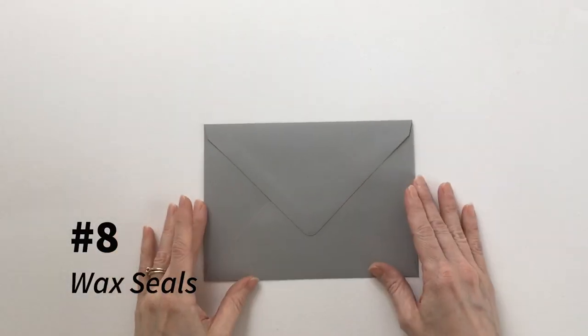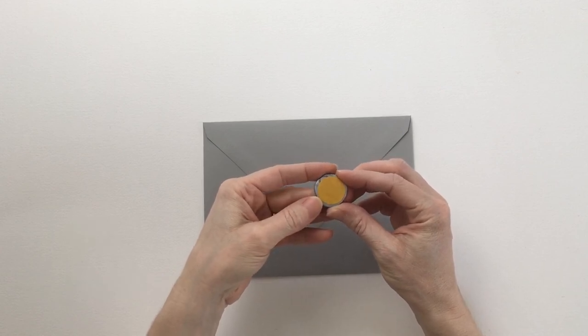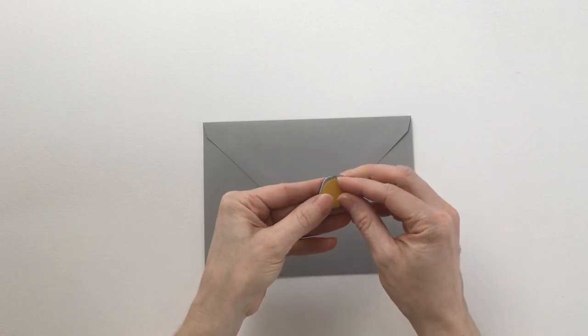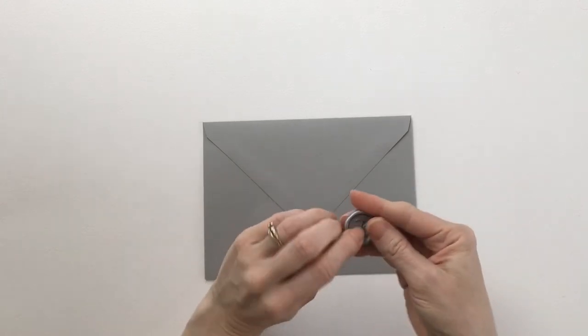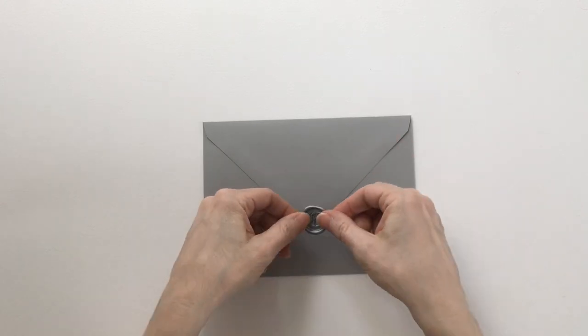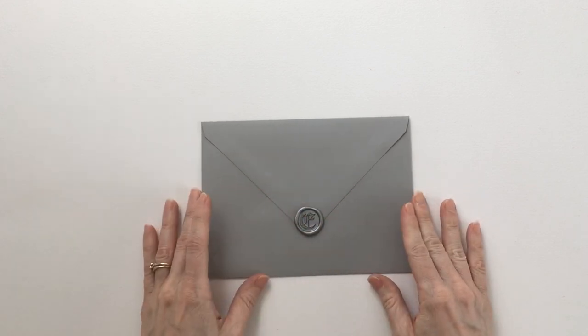If you have ordered our wax seals, they will have a pre-applied strong bond adhesive on the back like this. So when you apply them, simply peel off the sticky backing, make sure it's straight and just press firmly at the bottom of the flap there and you are good to go.